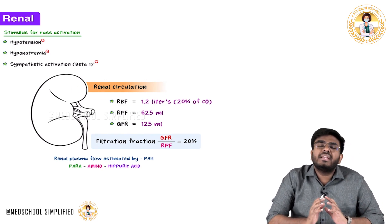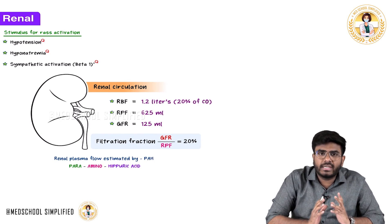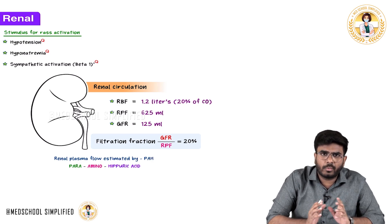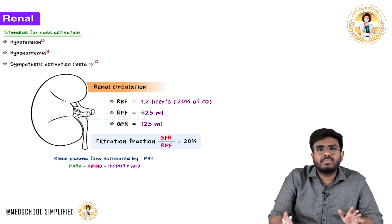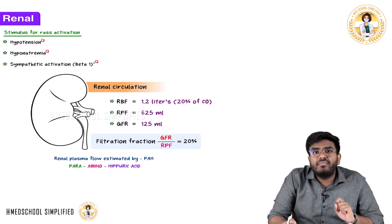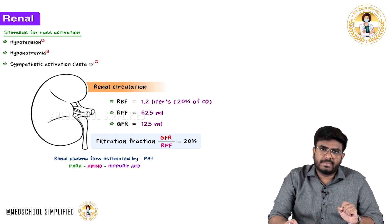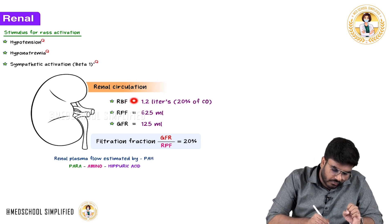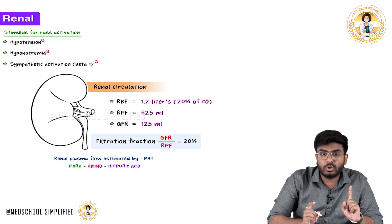Now, renal circulation. How much blood is actually going to your kidneys? You have two kidneys. Kidneys receive blood from the renal artery, which comes from the abdominal aorta. Every minute, the renal blood flow is 1.2 liters of blood going to both kidneys.